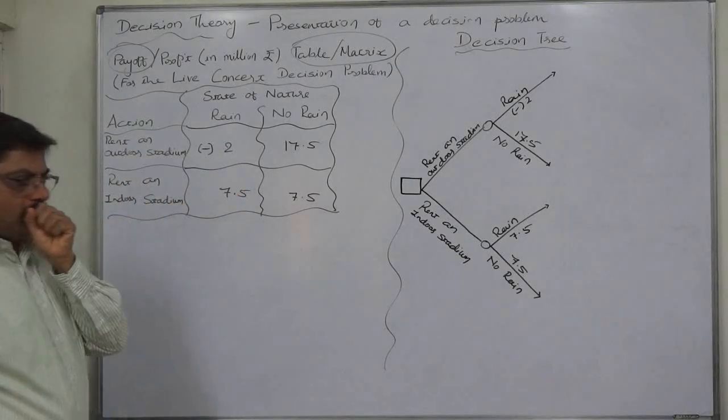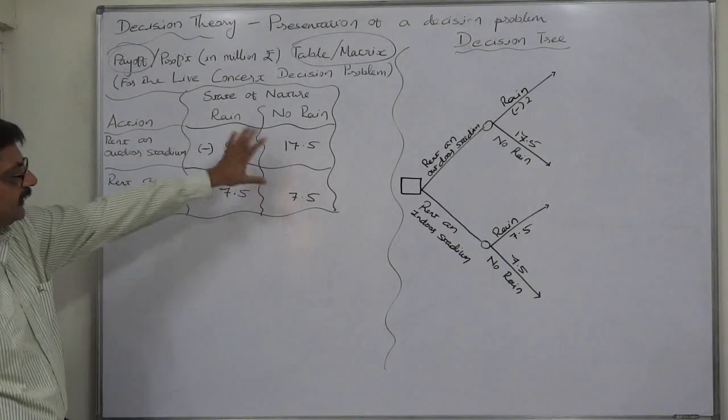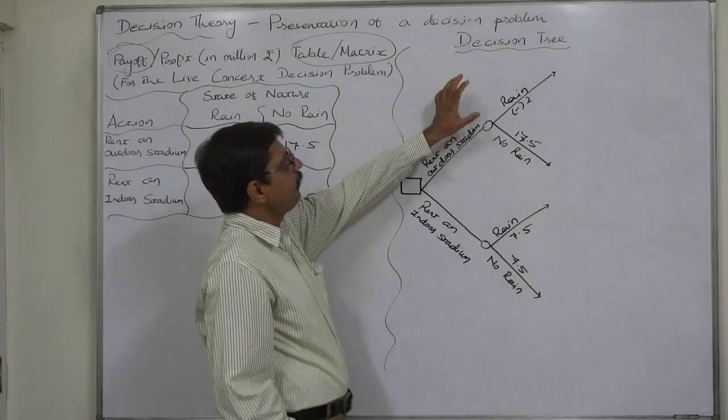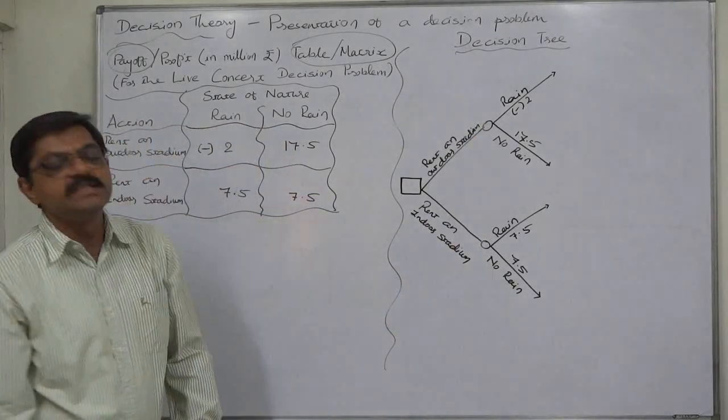For all combinations of actions and states of nature the outcomes or results can easily be expressed. So this is payoff matrix. Another style or way of presenting a decision problem is decision tree.